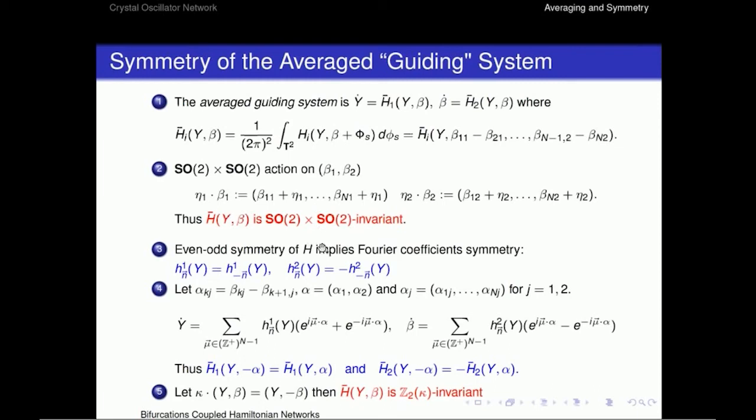Then with the even-odd symmetry of H, this implies symmetry in the Fourier coefficients, which are listed here in blue. And then what we can do is actually write down, instead of just keeping the betas, to simplify, we look at the differences of the betas, and we define this as an alpha phase or difference of phases. And so alpha is just alpha 1, alpha 2, and the alpha Js are just all these alpha 1 J to alpha N J. And then when we write our system in terms of a Fourier expansion, what we realize is that the average equation also has the same even and odd symmetry that I introduced before. And if we let kappa be some action on Y and beta, given by fixing Y but sending beta to minus beta, then the average equation is Z2 kappa. In fact, it should be equivariant.